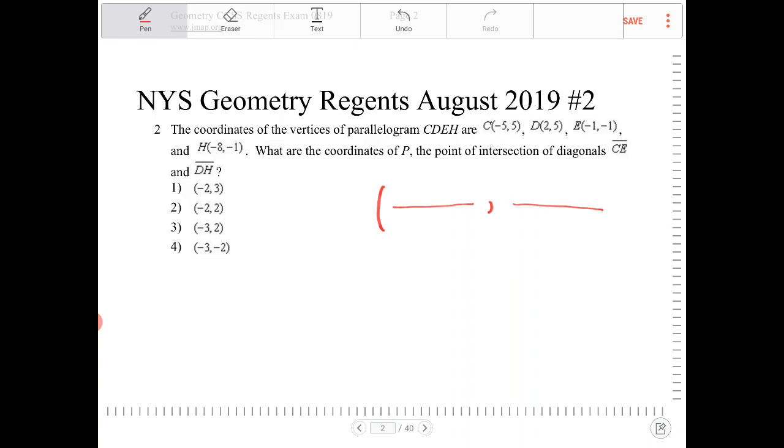We're going to take from point C the x-coordinate, which is negative 5, plus the x-coordinate of point E, which is negative 1, divide by 2. We're going to take the y-coordinate of point C, which is 5, and add that with the y-coordinate of E, which is negative 1, divide by 2.